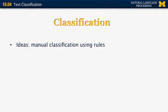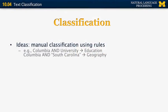There are many different techniques for classification. One is manual classification using a set of rules — for example, a list of all countries and states, and if a document contains those, classify it under geography. Here's an example: if a document contains the words 'Columbia' and 'university,' classify it under education; but if it contains 'Columbia' and 'South Carolina,' classify it under geography, since Columbia is the capital of South Carolina.